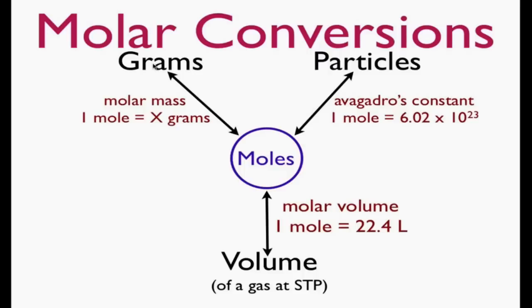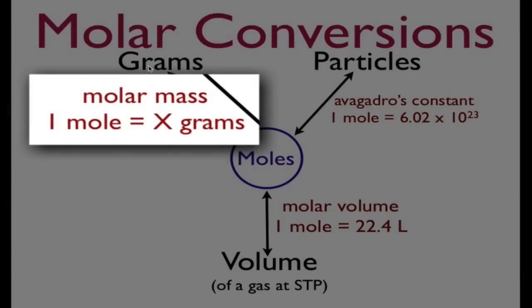We know that if we have a certain number of grams of substance, we can convert to moles through its molar mass because we know that one mole of any substance has a fixed mass.